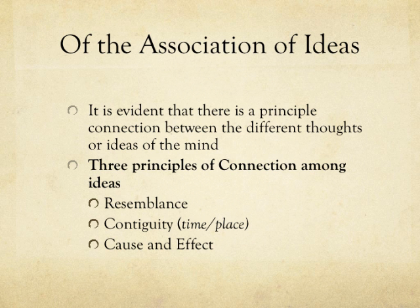Of the Association of Ideas. Hume starts by pointing out that as he reflects upon the way our ideas associate with one another — how we understand things, how ideas form in our mind — because of course we're talking about human understanding here at a fundamental level. He's saying the way ideas appear in the mind form a certain regularity, and from his reflection, ideas come to us in three distinct forms.